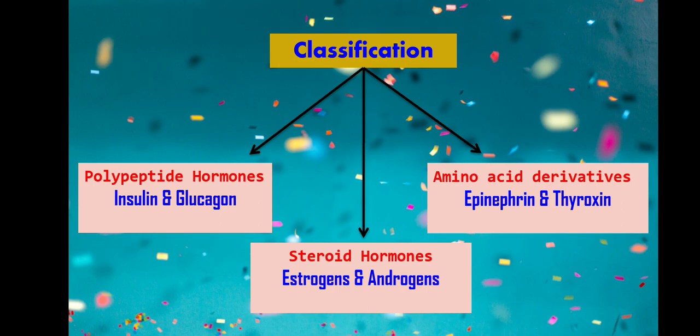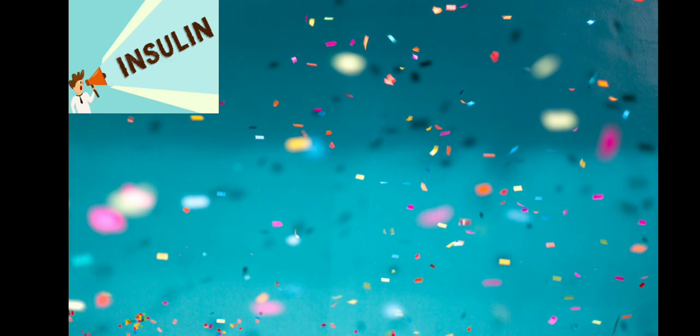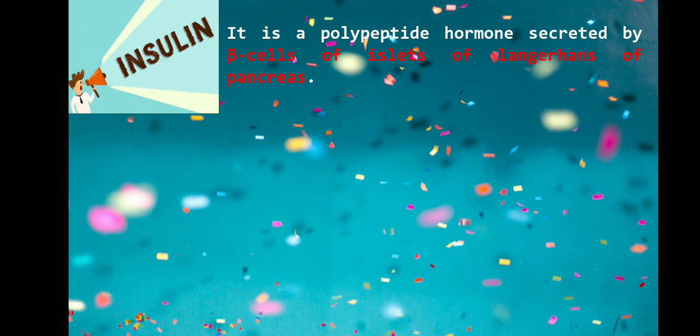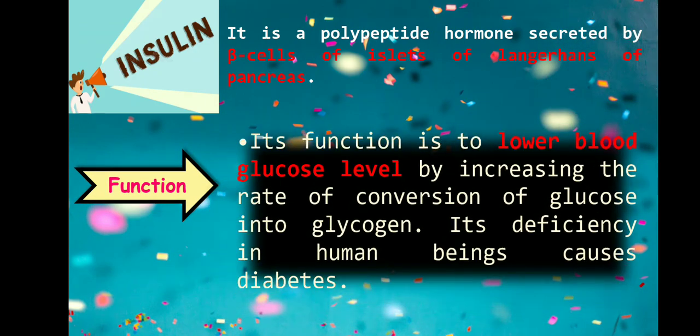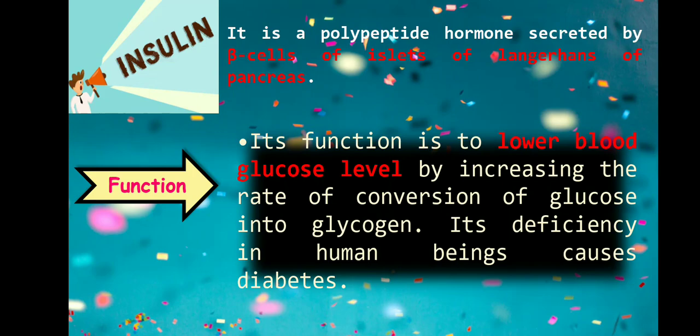The first hormone is insulin, a polypeptide hormone secreted by the beta cells of the islets of Langerhans present in the pancreas. The function of insulin is to lower blood glucose level. Insulin secreted by the pancreas decreases — reduces — lowers blood glucose level, by increasing the rate of conversion of glucose into glycogen.